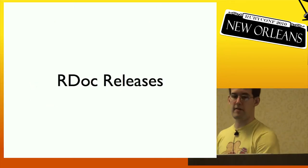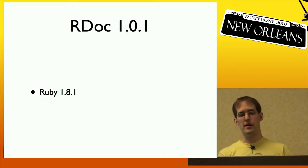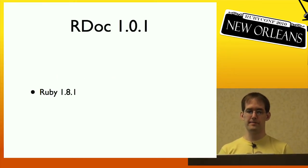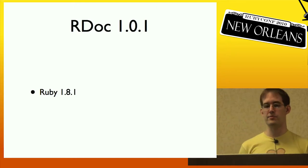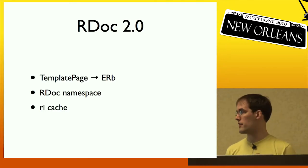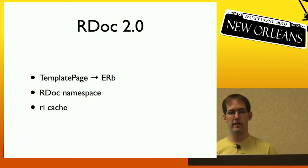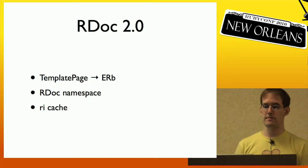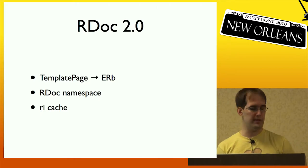Like RubyGems, I'll make a rundown of the RDoc releases. RDoc 1.0.1 was added to Ruby 1.8.1, and much of the development of the original version was done in the 1.8 branch without any separate release notes. When I took over RDoc releases, I bumped the version to version 2. I replaced the template page templating with ERB and moved everything into the RDoc namespace. I also added Ryan Davis' RI cache to speed up RI method lookups.